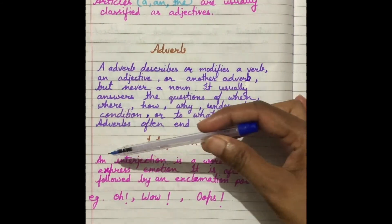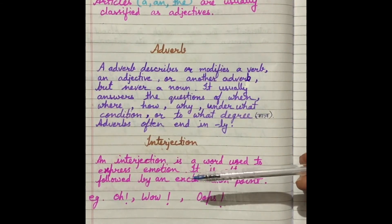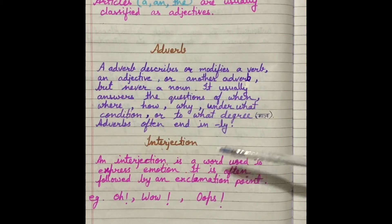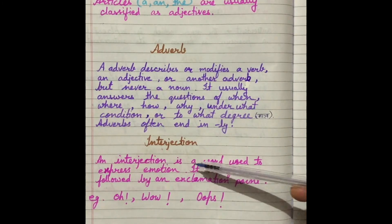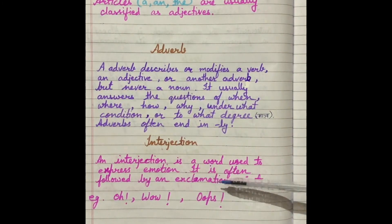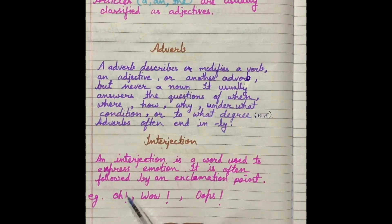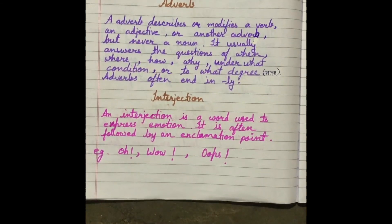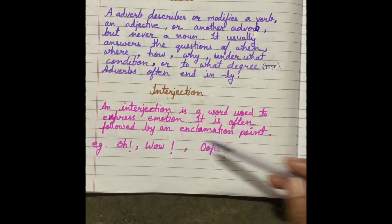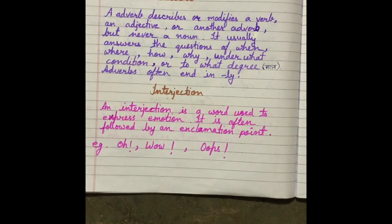Interjection. An interjection is the word used to express emotion. Jo hamare emotions hote hain, jo hamaari feelings hoti hain, unhe express karne ke liye jin words ko use kiya jaata hai, that is called interjection. It is often followed by an exclamation point — jahan bhi hum interjection word use karte hain, after that we have to put an exclamation point. Like: oh, wow, oops — these are some examples of interjection.